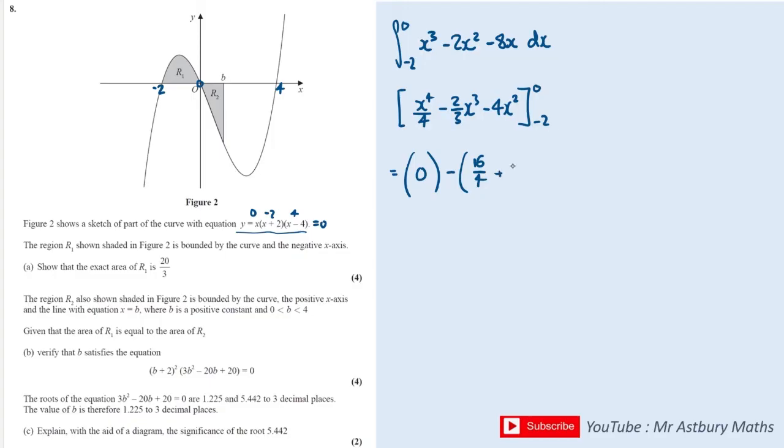Times it by 2 gives me 16, put that over 3. And then minus 2 squared is 4 times by minus 4 is minus 16. And this will equal the given 20 over 3. Perfect, that's part A done.